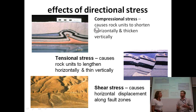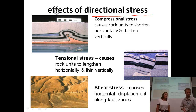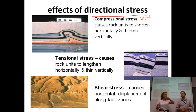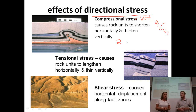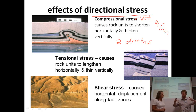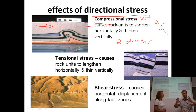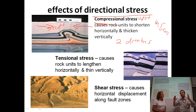Now we're looking at the effects of directional stress. When stress is applied to something, it might be applied 360 degrees evenly all the way around from every direction. When we talk about directional stress, it's not being applied evenly — it's only being applied from two different directions. So let's look at the types of directional stress and their effects on materials. The first one is compressional stress — when I think of compression, I think of squishing two things together. It causes rock units to shorten horizontally and thicken vertically. If you squeeze these rocks together, just like in the upper left-hand corner, you can see they'll shorten horizontally and actually get thicker vertically, up and down.